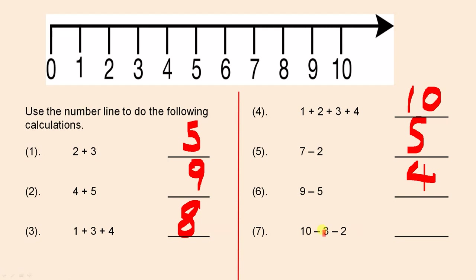And the next one: ten minus three minus two. Put your pencil on the ten. We go three to the left: one, two, three. Then we go another two to the left: one, two. We landed on the five, so that's the answer.